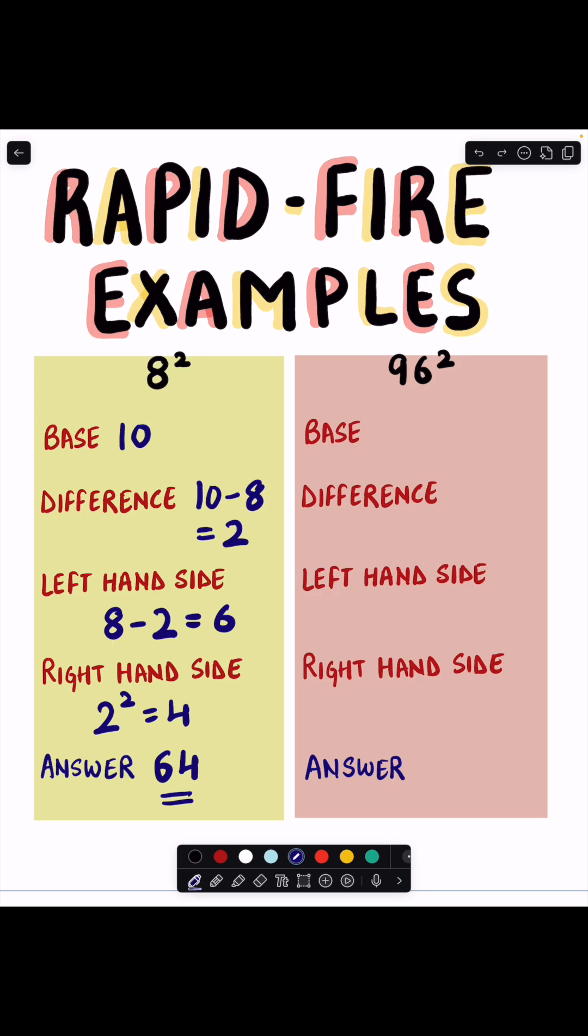Let's solve our second example which is 96 squared. So let's find the base which is 100 in this case. Now we're gonna find the difference between the actual and the base number which is 100 minus 96 and it gives us 4. Now to find the answer for the left hand side we have to subtract the difference from the actual number.